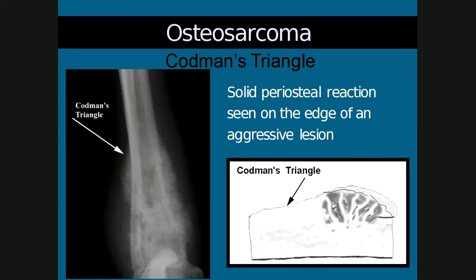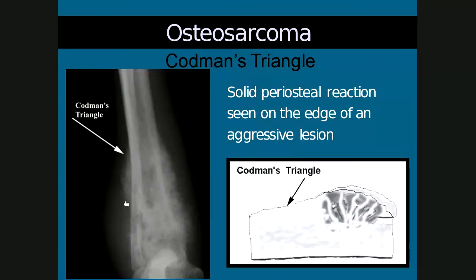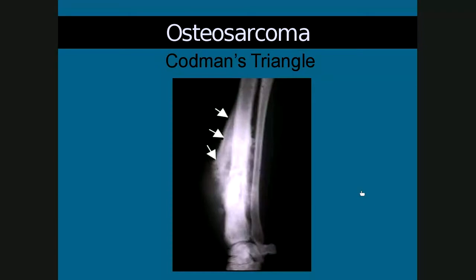Coming back to Codman's triangle: this is the solid periosteal reaction seen on the edge of an aggressive lesion. The periosteum here is slowly elevated along with the rest of the pathology but not as rapidly as the diseased bone, which is why it has a more benign appearance. However, it's important not to judge the aggressiveness of the lesion based on that alone — you need to look at the whole picture. Here's another example showing a really nice Codman's triangle proximally, on the diaphyseal side of the lesion.